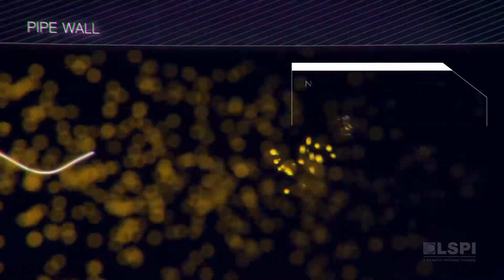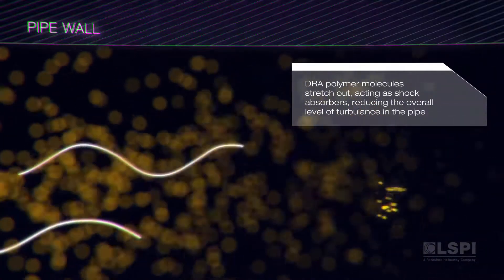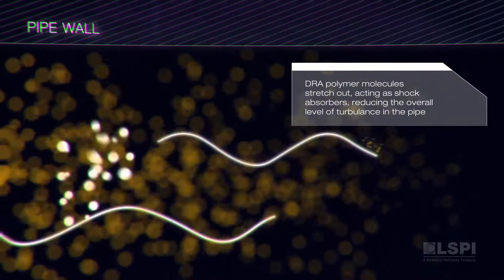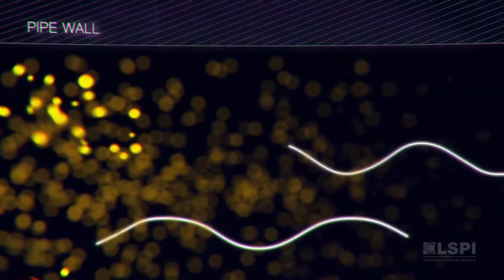The DRA polymer molecules stretch out to long lengths, acting as shock absorbers, reducing the overall level of turbulence in the pipe.